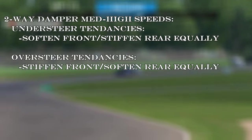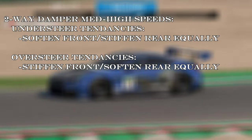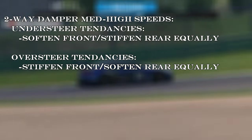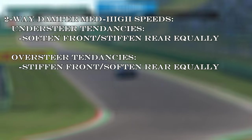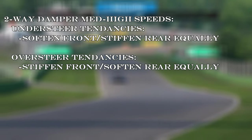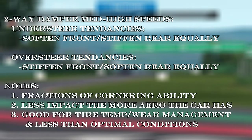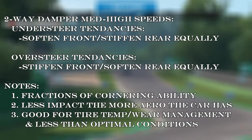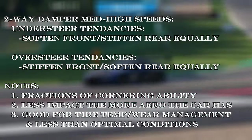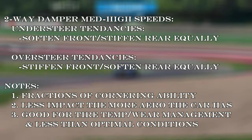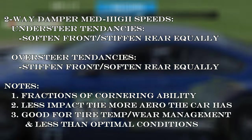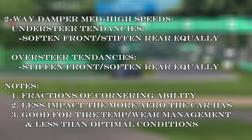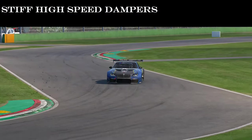For steady-state cornering on a bumpy track at medium to high speeds: if you are encountering understeer tendencies, softening the front dampers and stiffening the rears in equal measure may help. For oversteer tendencies, the opposite — stiffening the front dampers and softening the rears. Keep in mind we are talking about fractions of cornering ability, and in a car with no aero the more aero capability your car has, the less this change will matter. However, these fractions add up in tire heat. If you can take Tamburello stacking one to two Celsius less of right-front tire heat each lap on a hot day, by the end of the race your right-front tire will be in better shape than your opponents'.